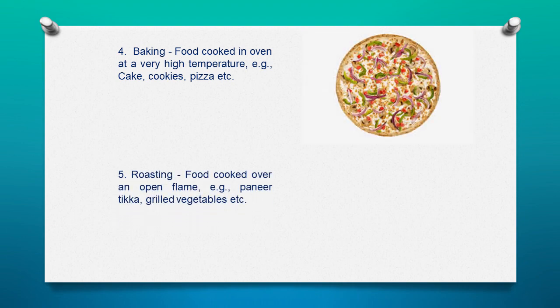The next method is the roasting method: food cooked over an open flame. Examples include paneer tikka, grilled vegetables, etc., which are cooked by the roasting process.